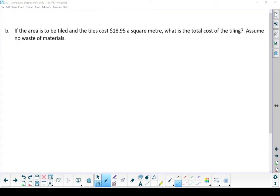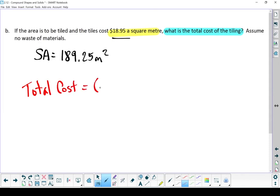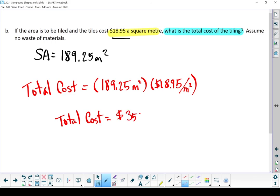Okay, let's take a look at part B of this question. Because there's always a part B. If the area is to be tiled and the tiles cost $18.95 a square meter, what is the total cost of the tiling? So the real question is, what is the total cost of the tiling? The information we've got, $18.95 a square meter. We know from the previous part of our question that the surface area of that entranceway is 189.25 square meters. And if each square meter costs $18.95, if we multiply those two pieces together, we can end up with our total cost. So if we take 189.25 meters squared, I'm going to times it by $18.95. Total cost equals $3,586.29.